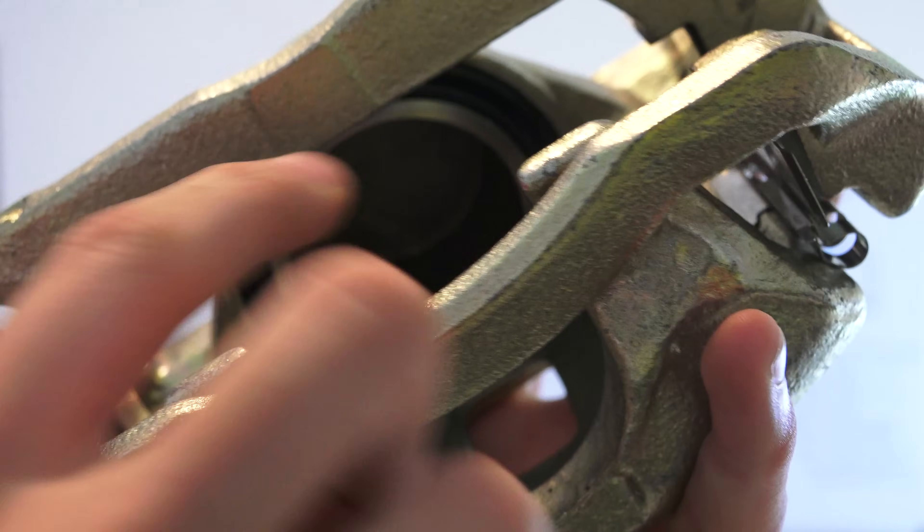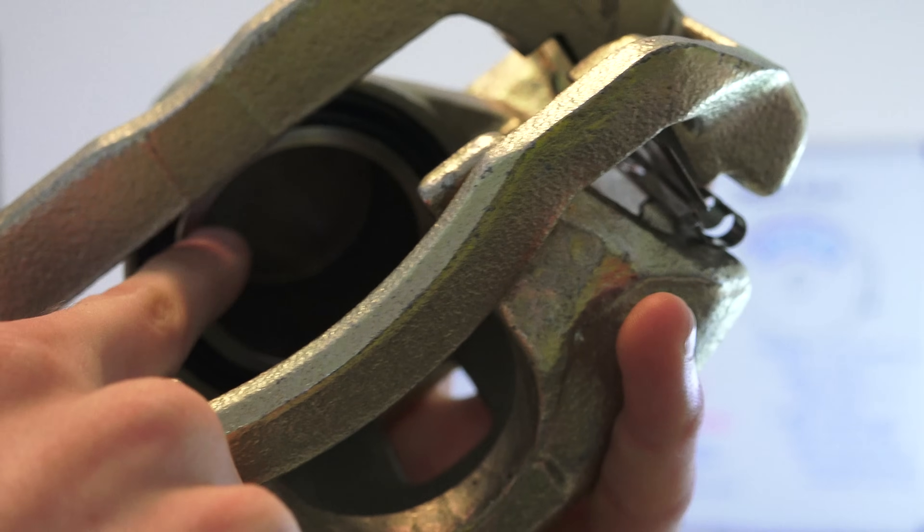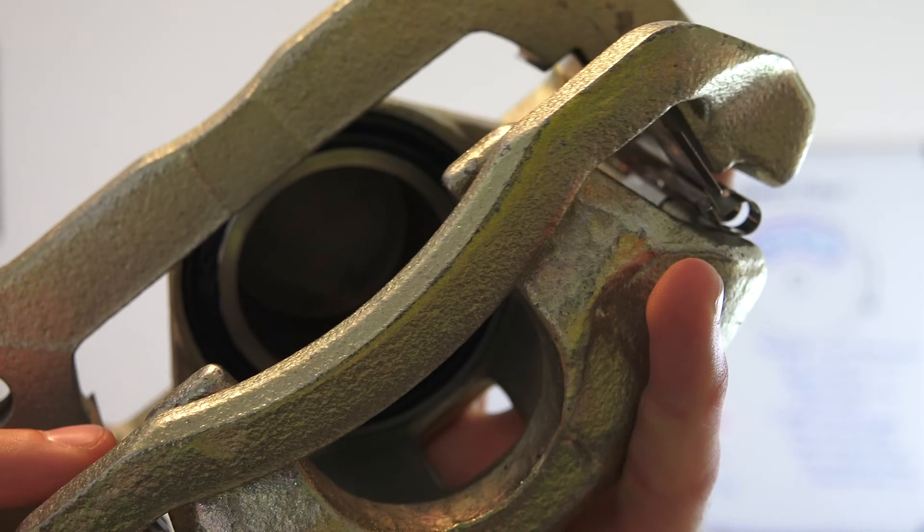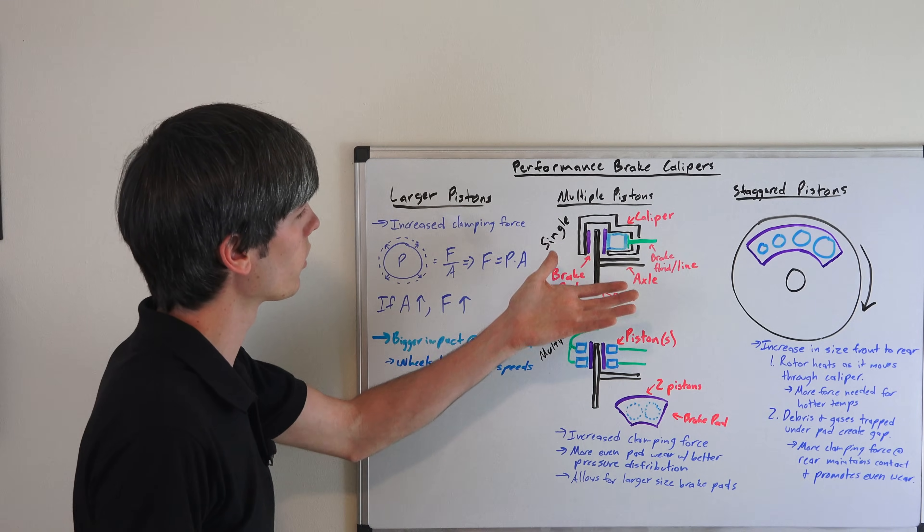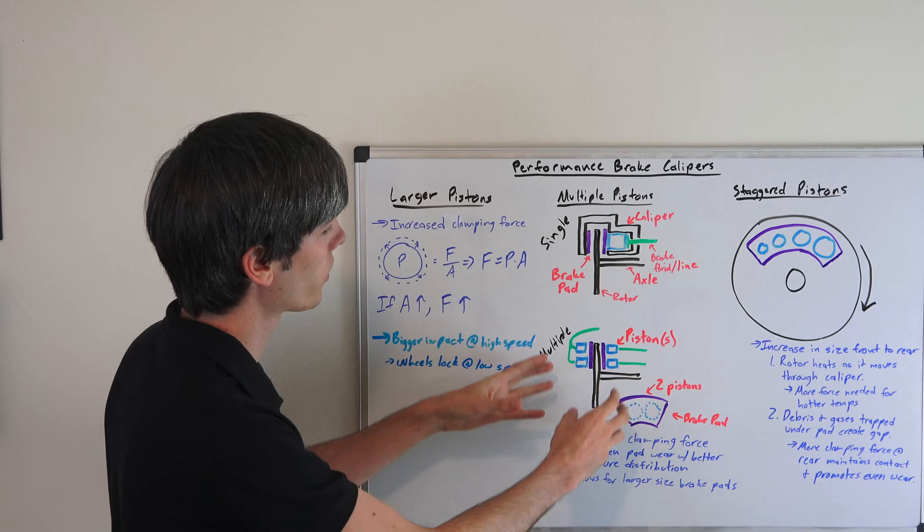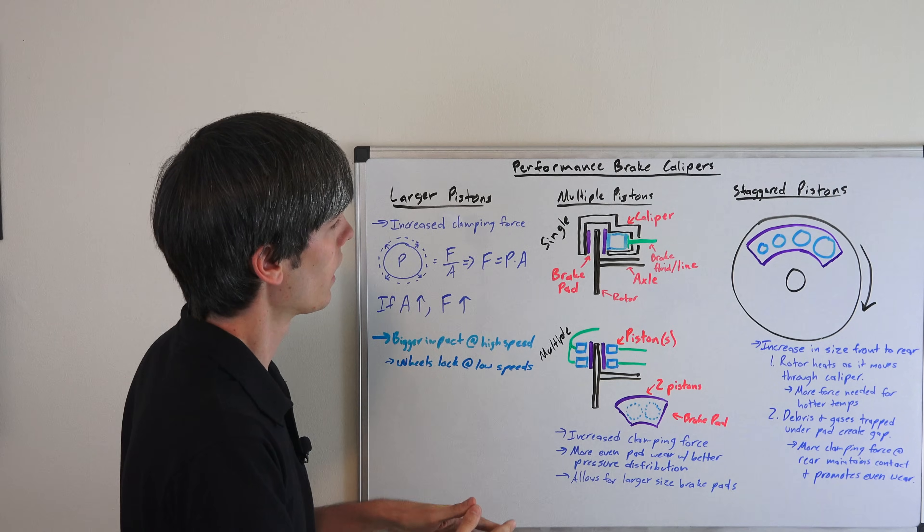So moving on to multiple pistons, this caliper I'm showing you right here has a single piston which you can see in there. Very large but it is not multiple, it's just a single piston in there. And so here I have my drawings of a single piston caliper and a multiple piston caliper.